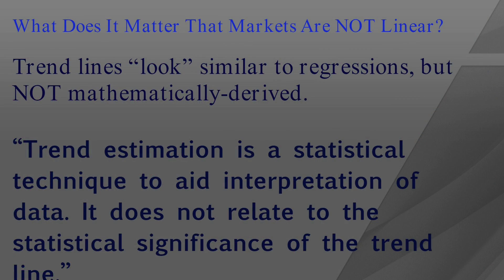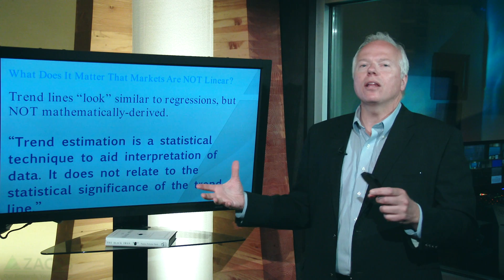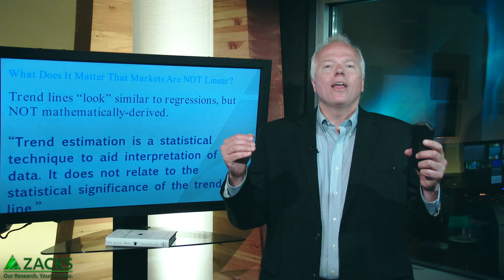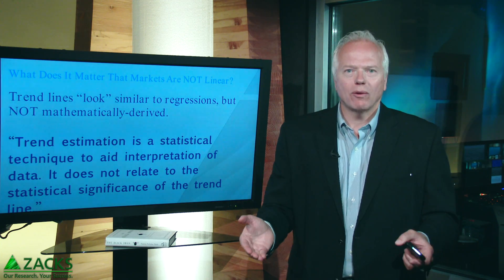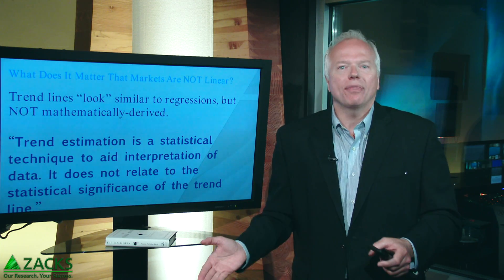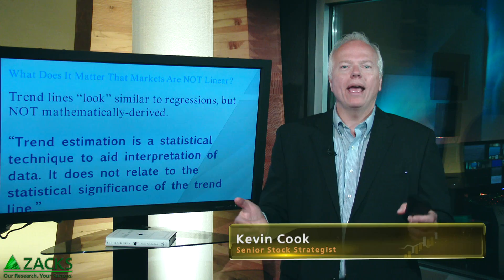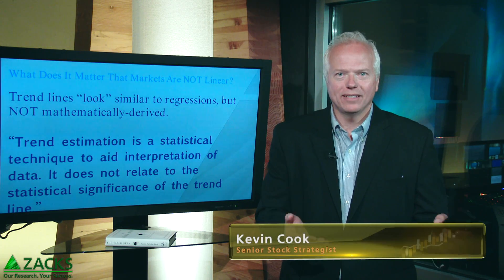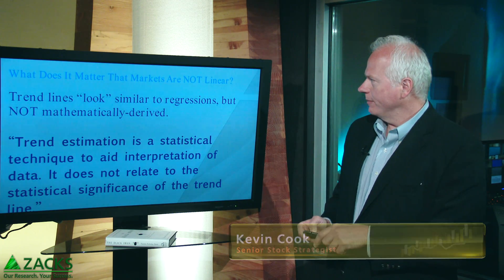Here's a quote from a stats book: 'Trend estimation is a statistical technique to aid interpretation of data.' That makes sense. But it does not relate to the statistical significance of the trend line itself. In other words, a linear regression line is not the data — it's just a way of interpreting the data. Key thing to remember here.